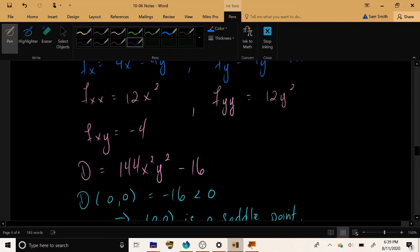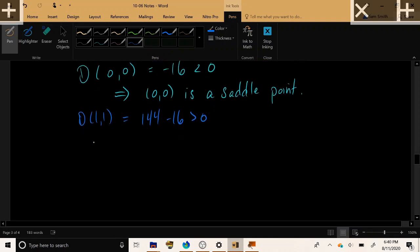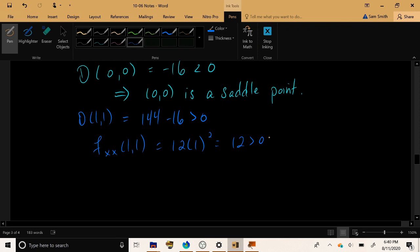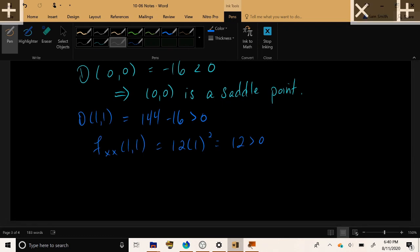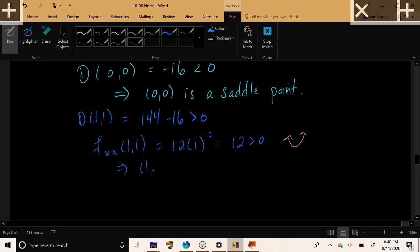So let's plug in (1, 1) to the second derivative, resulting in 12 times 1 squared, which is equal to 12. Because this is positive, and the function is concave up in the x-direction, we can conclude that (1, 1) is the location of a local minimum. It's lower than any nearby points.